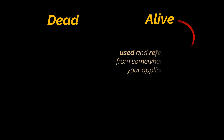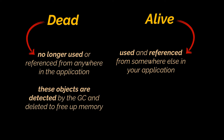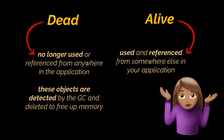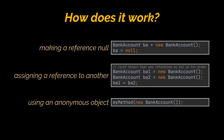Inside the heap space and over the lifetime of a Java application, new objects are created and released. At any point in time, heap memory consists of two types of objects: alive or dead. Alive objects are being used and referenced from somewhere else; dead objects are no longer used or referenced from anywhere in the application. It's these dead objects that are detected by the GC and deleted to free up memory. But how exactly does it work in Java?